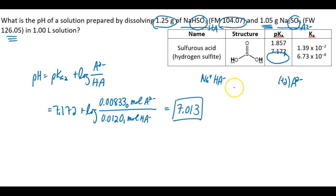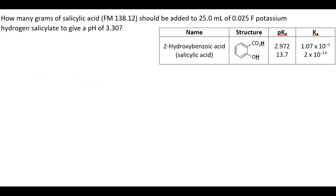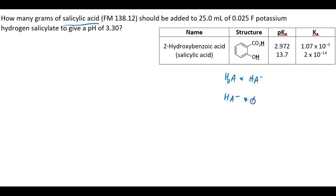The key step is determining what solutes the buffer contained. Let's try another one with a slightly different twist. This time they want to know how many grams of salicylic acid should be added to 25 mL of 0.025 formal potassium hydrogen salicylate. From those names and the information in the appendix, can you tell if this is a buffer containing H2A and HA minus, or one containing HA minus and A minus 2?